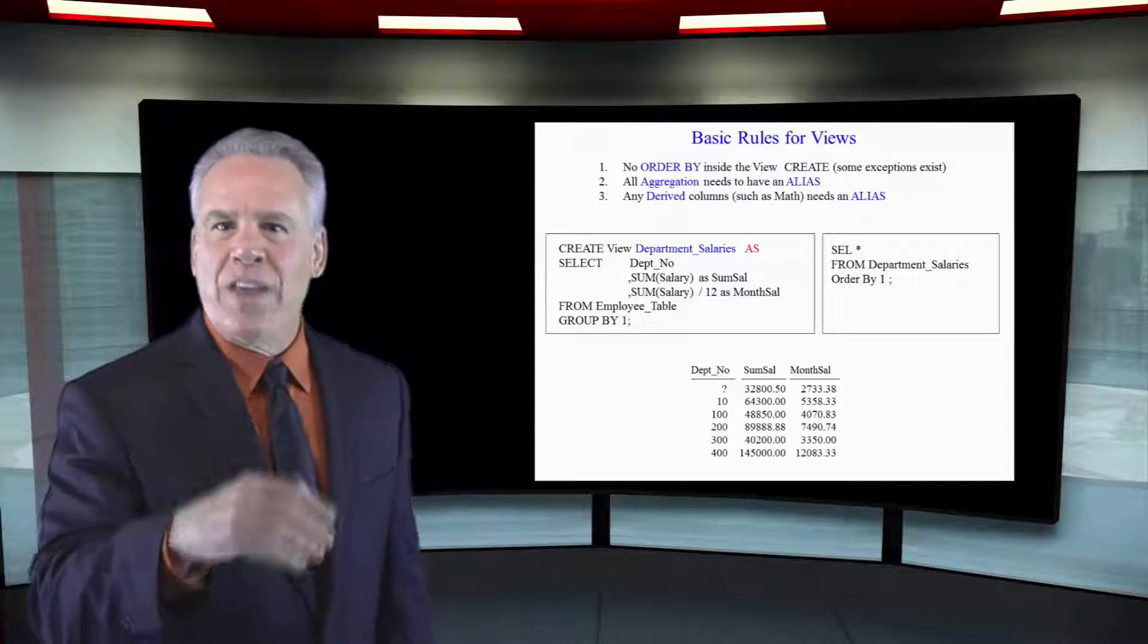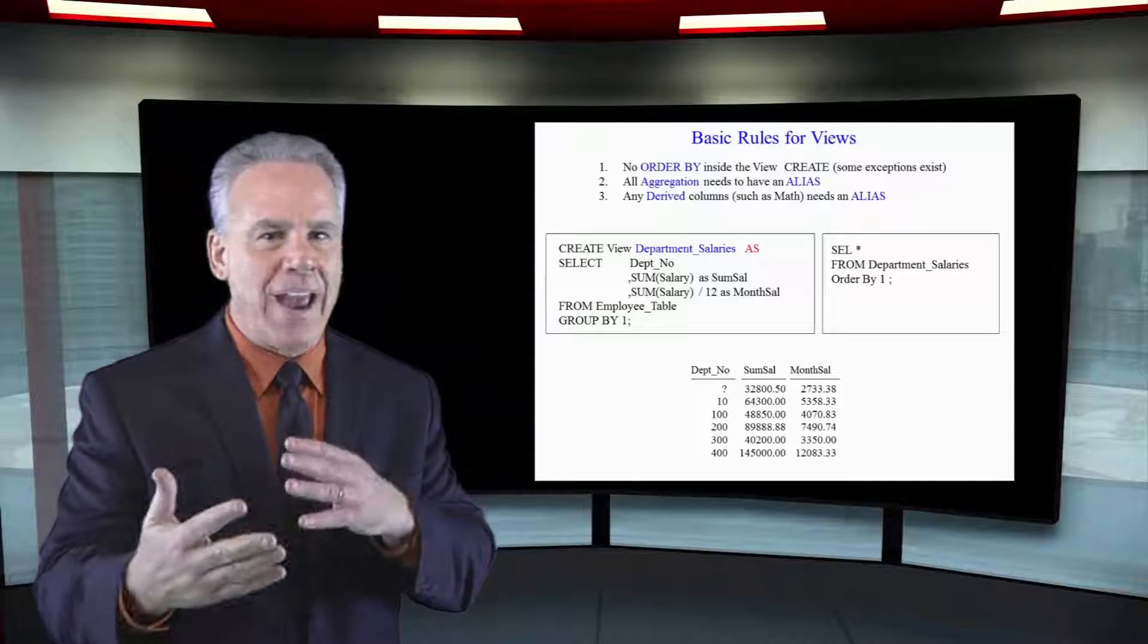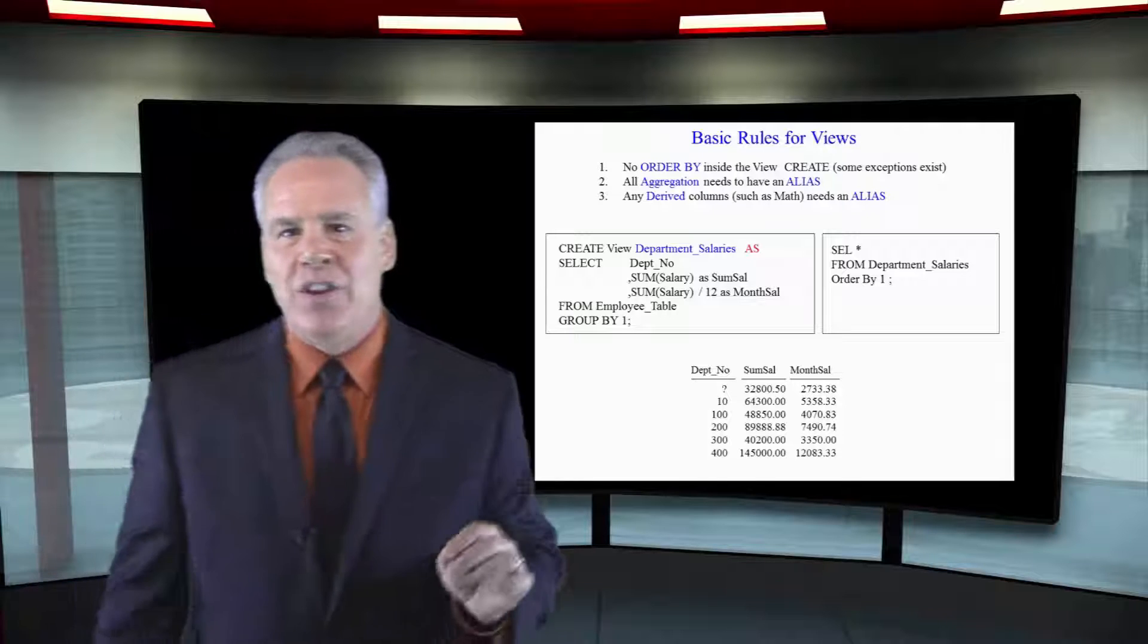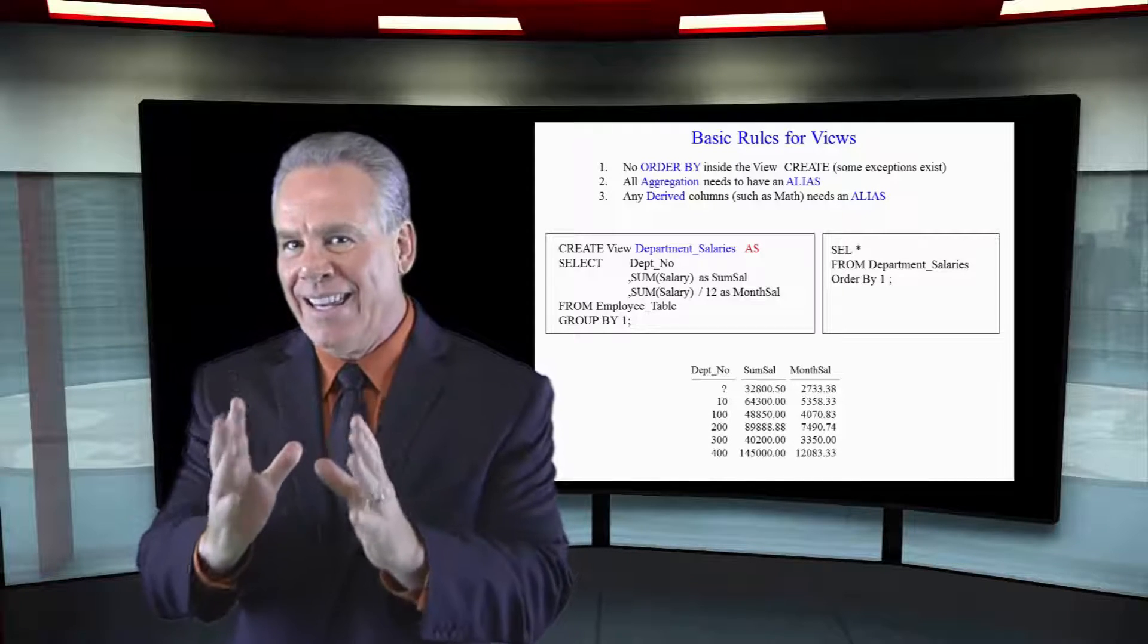Secondly, if you have a view with aggregation, sum, average, max, min, or count, then you're going to have to give those columns a direct alias.